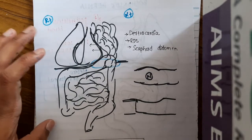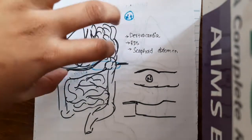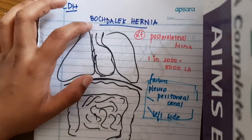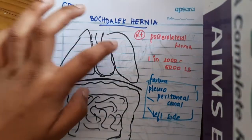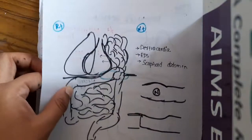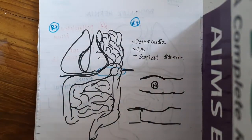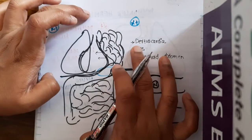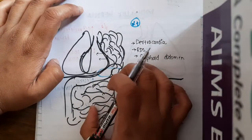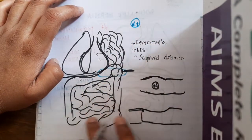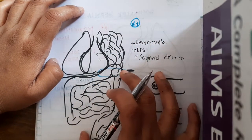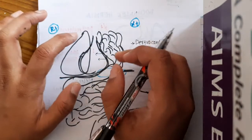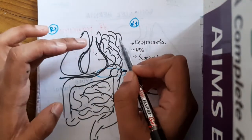One more important concept is about bag and mask ventilation. When you do bag and mask ventilation, the air — along with entering the lungs — also enters the stomach. But here in congenital diaphragmatic hernia or Bochdalek hernia, the stomach is present in the thoracic region rather than the abdominal region. So if you give bag and mask ventilation, there is distension of the stomach.